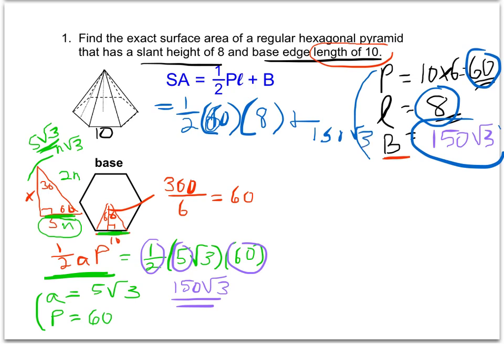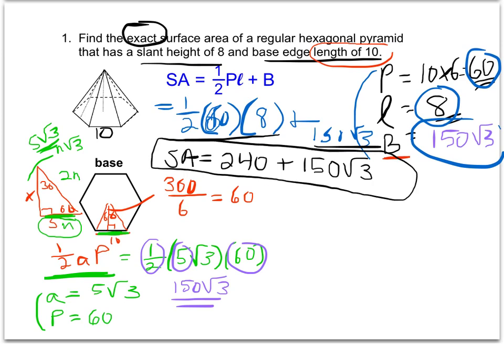And now when I simplify that, I have two terms here. When I simplify this term, again, 1 half times 60 times 8, I can plug that in my calculator, 0.5 times 60 times 8, and that's going to come out to 240. And then this second term, 150 root 3, because I want an exact answer, I'm just going to leave that as 150 root 3. And this is my final answer, because I want it in exact form, I can't combine these two terms. And my final answer for the surface area is 240 plus 150 root 3 units squared.